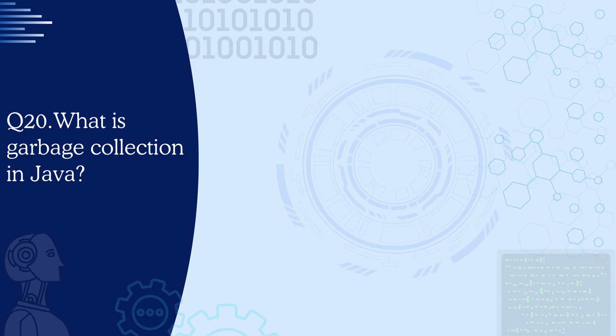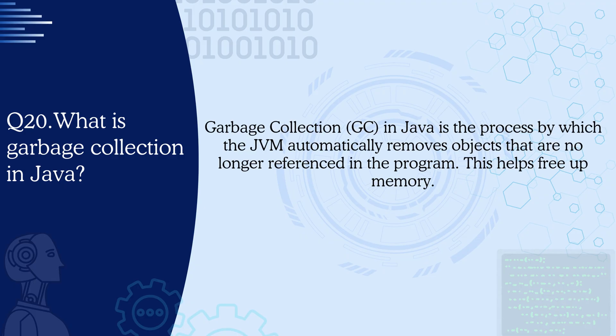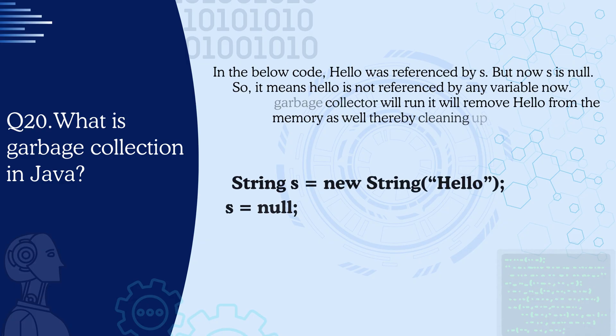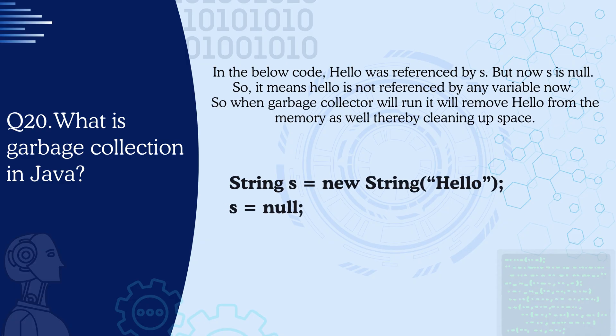Question 20: What is garbage collection in Java? Garbage collection is the process by which the JVM automatically removes objects that are no longer referenced in the program, helping to free up memory. For example, if a string 'hello' was referenced by variable s but now s is null, hello is no longer referenced by any variable. When the garbage collector runs, it will remove hello from memory, cleaning up that space.